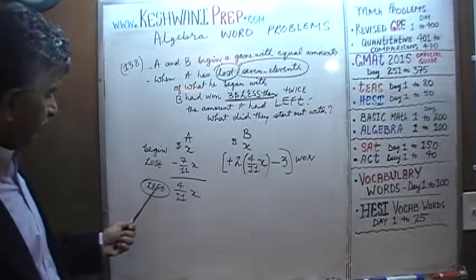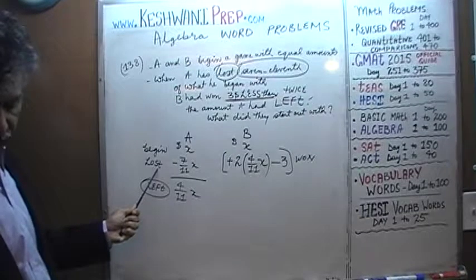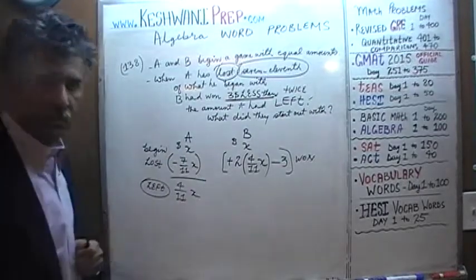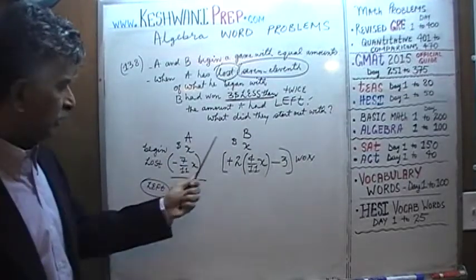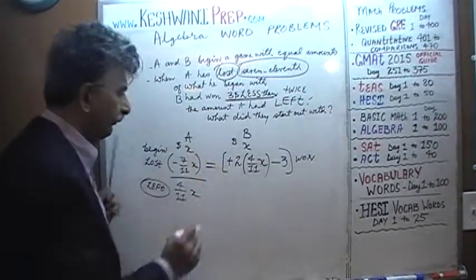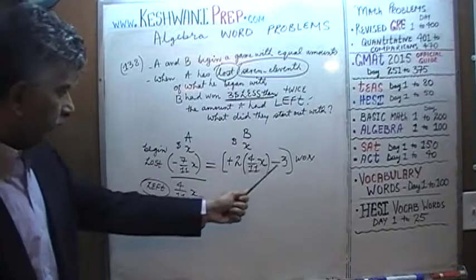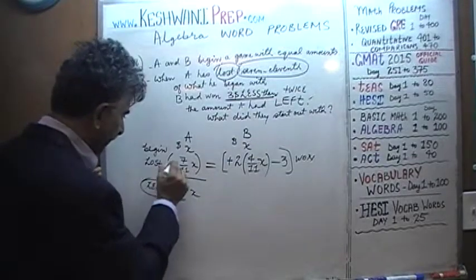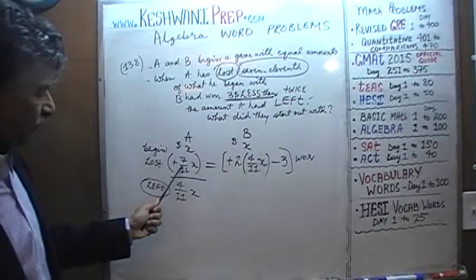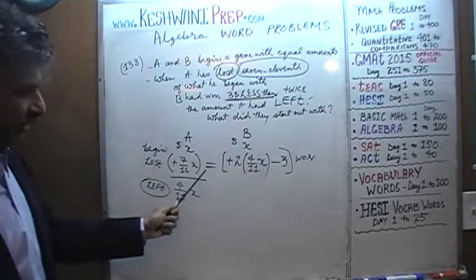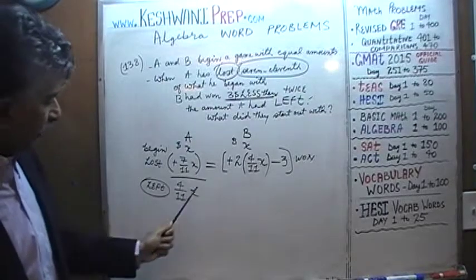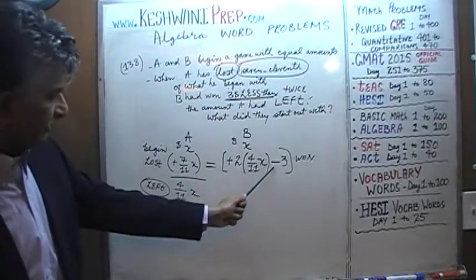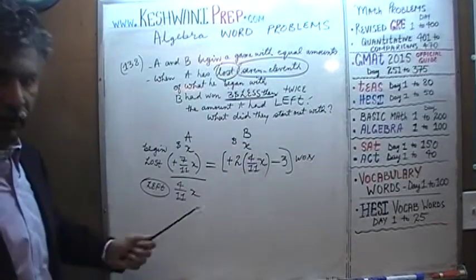The amount of money A has lost equals 7/11x. The amount B has won is 2 times 4/11x minus 3. Since these are the only two people playing, the amount A lost must equal the amount B won. So our equation is: 7/11x = 2(4/11x) minus 3. This simple linear equation is all we need to solve.